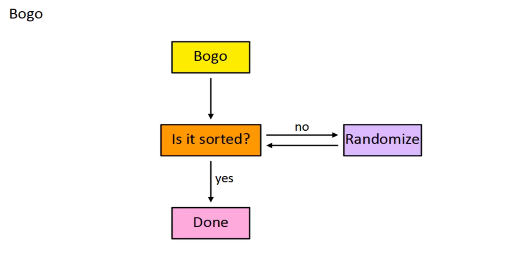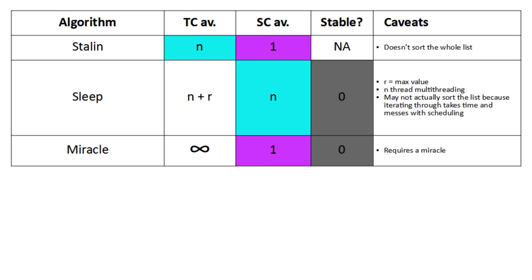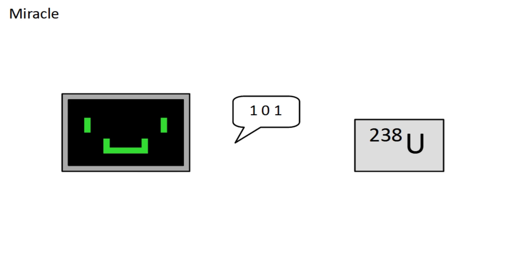Miracle sort is similar to bogosort, but it cuts out the step of randomizing the list. So basically, if the list is sorted, you're done, and if not, just wait a little bit and then check again. Hopefully, a miracle will have happened, but if not, you could just keep repeating. There's also a minor optimization of sorting in close proximity to a uranium source to take advantage of radiation.